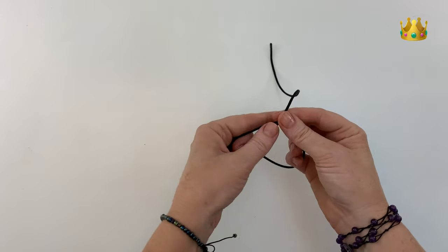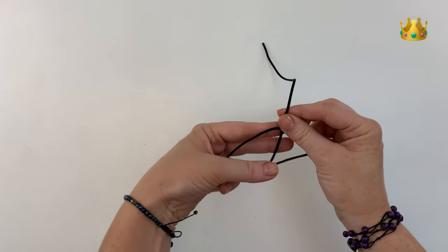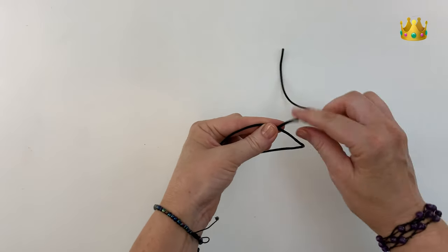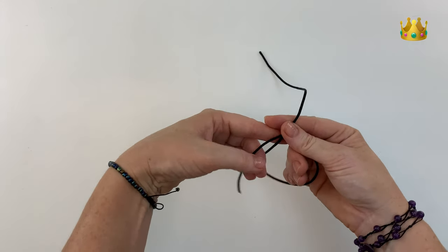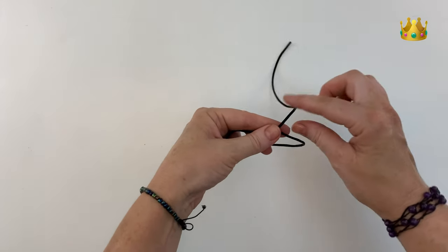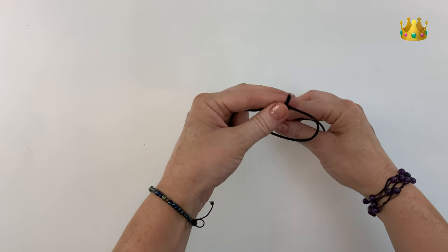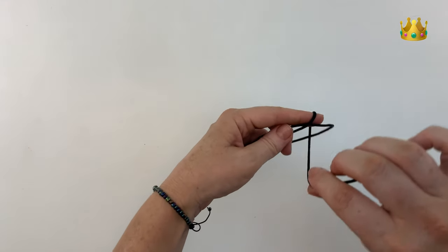Now I readjust my left hand so that my left index finger runs parallel with this cord underneath. Now with this top cord, we bring it down the back and around our finger for a first loop.